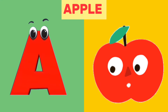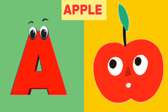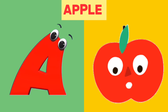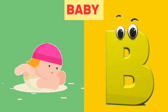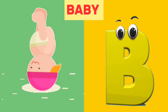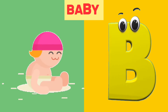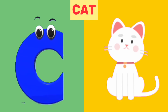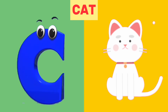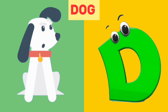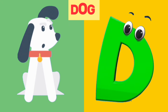A is for Apple. A, A. Apple. B is for Baby. B, B. Baby. C is for Cat. C, C. Cat. D is for Dog. D, D. Dog.